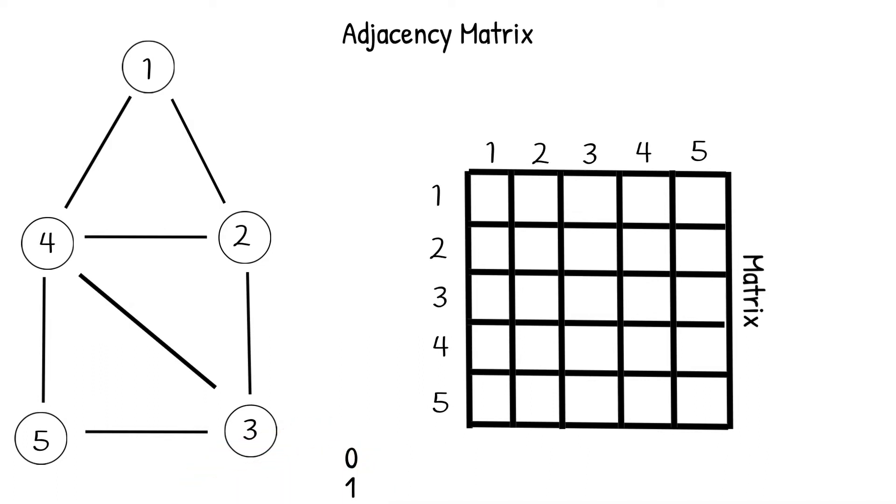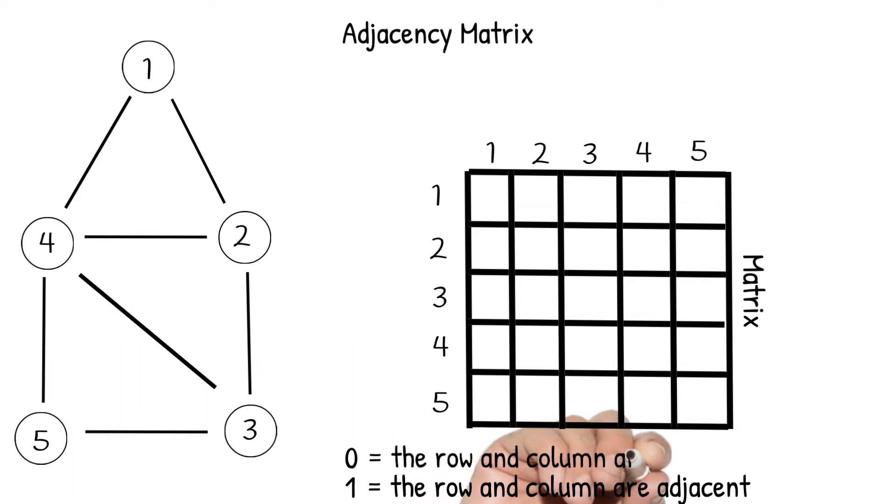Each slot in our matrix we will need to either fill with a 0 or a 1. If we put a 1 in a slot, it means that the corresponding column and corresponding row are adjacent. Or in other words, the row node has an edge leading to the column node. If we put a 0 in the slot, it means that the two nodes do not have a connecting edge.